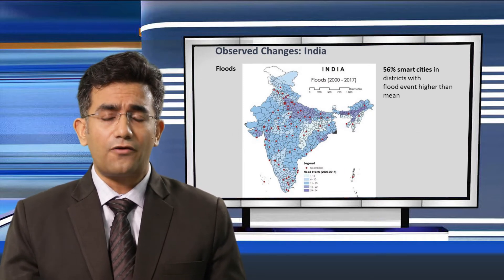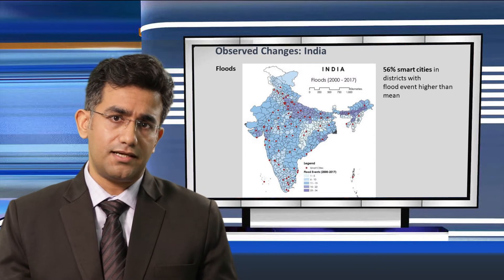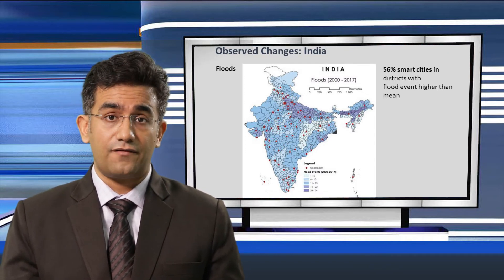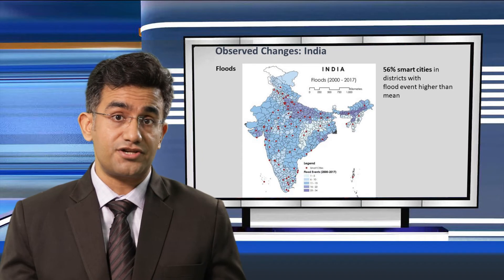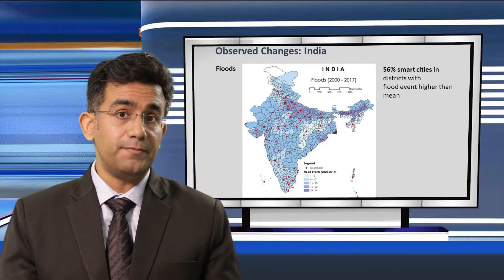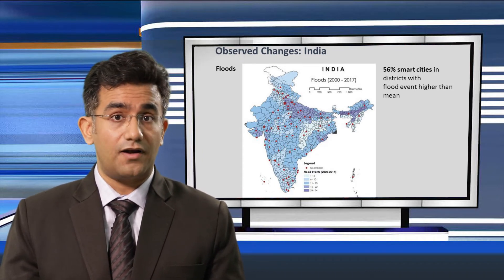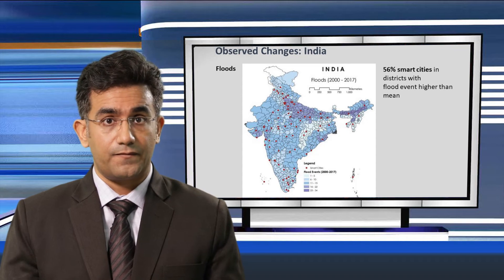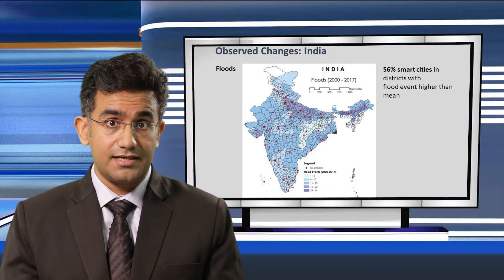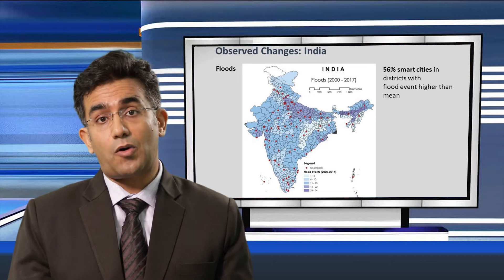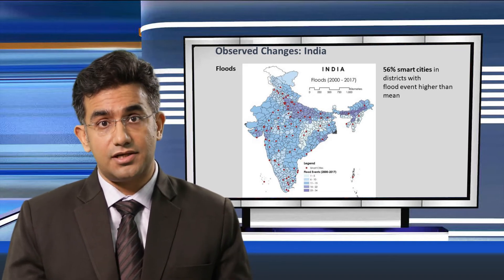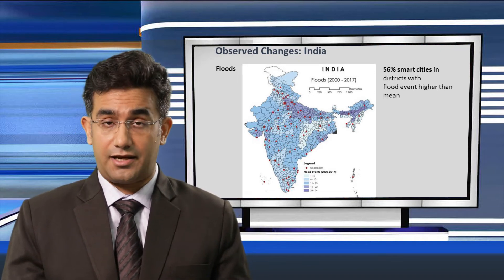The same kind of trends are seen for flooding events over India. Around 50% of all smart cities are currently situated in districts which have larger than national means for flood events. This is very important for the infrastructure and development sector, as the more flood events occur over a city or district, the more important it is for planners to take that into consideration in their planning activities.